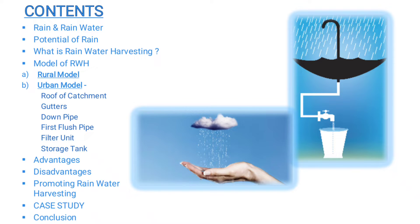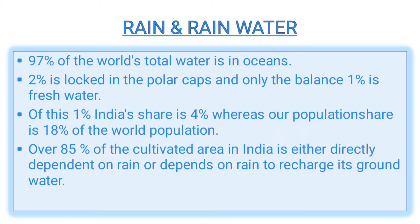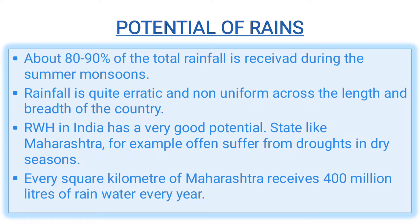These are the contents which I will explain in the next slides. First, rain and rainwater: the world's total water — 97% is in oceans, 2% is locked in polar caps, and the rest 1% is fresh water. Of this fresh water, India's share is 4%, whereas our population share is 18% of the world population. Over 85% of the cultivated area is either directly dependent on rain or depends on rain to recharge its groundwater.